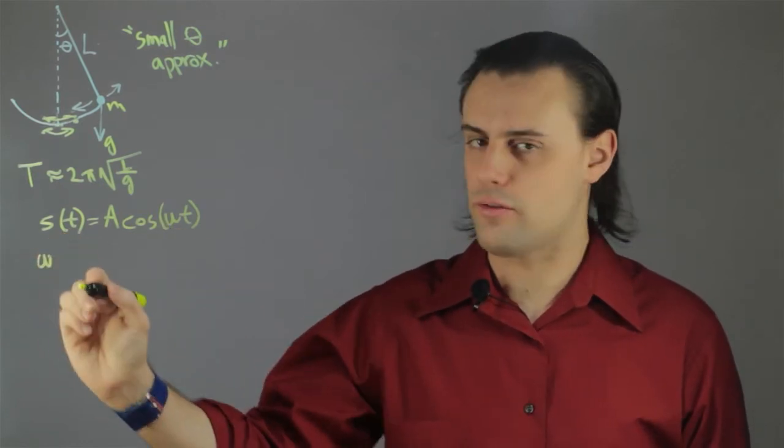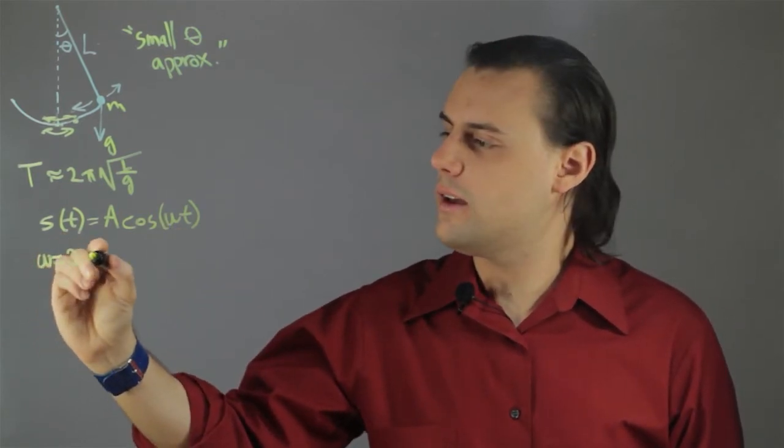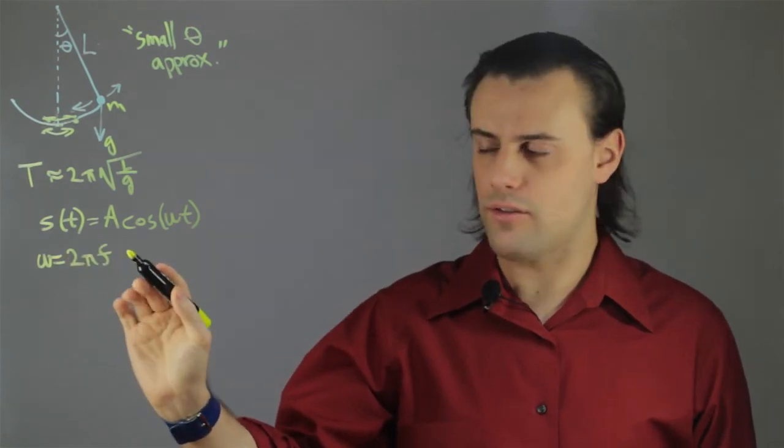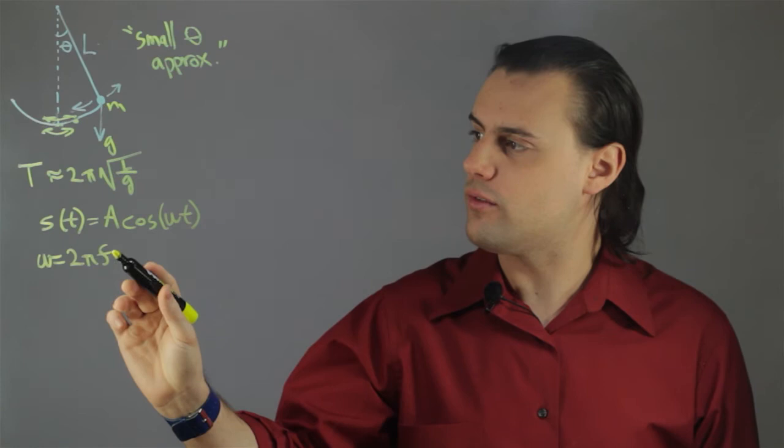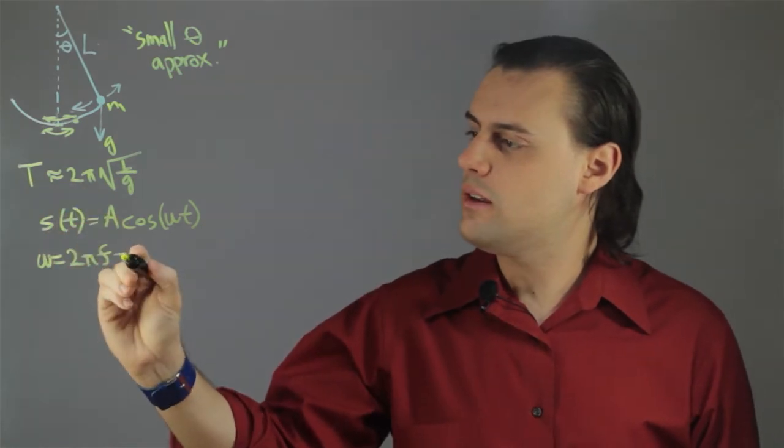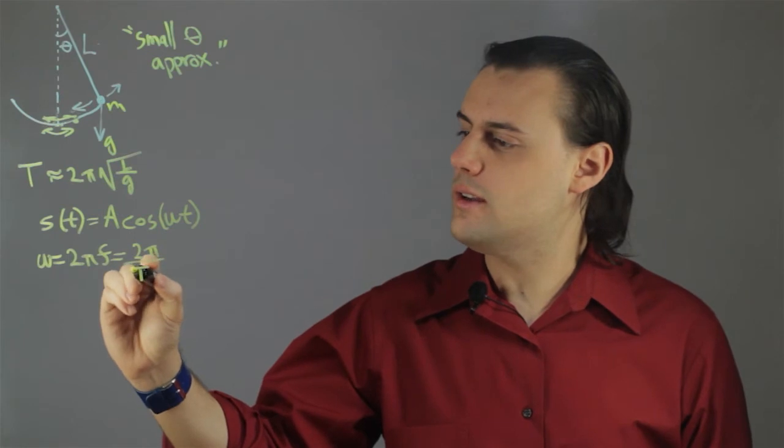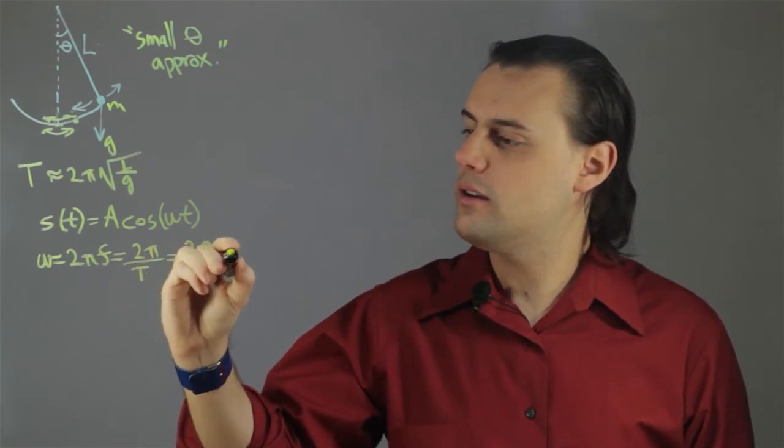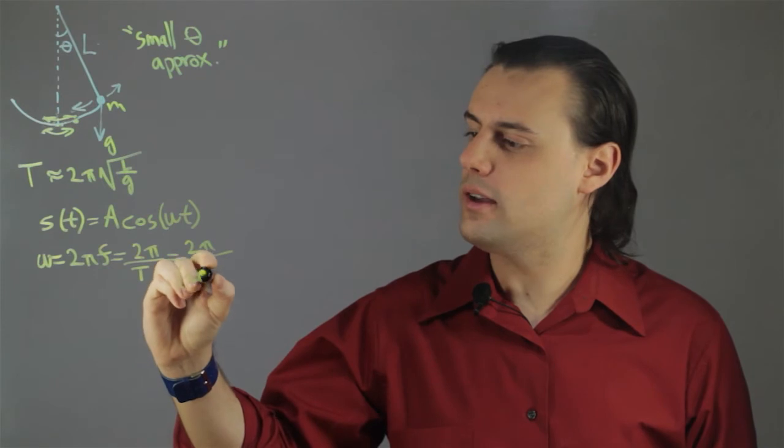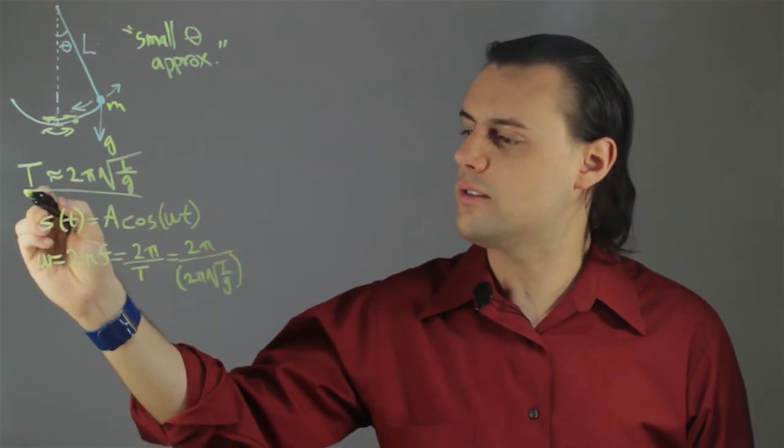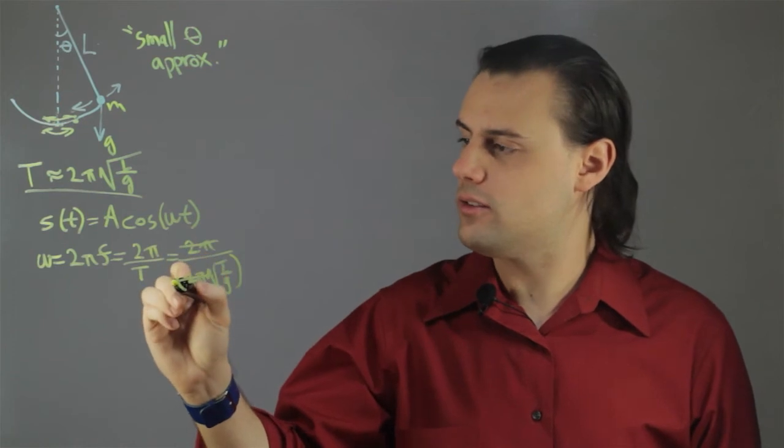Omega is the angular frequency, which is equal to 2πf, and this f is the linear frequency. The inverse of the frequency is the period, so I end up with 2π over T, and this is equal to 2π over 2π square root L over g. If I substitute in this expression, the 2π's cancel out.